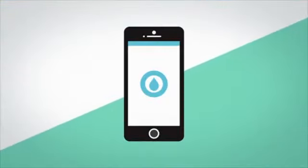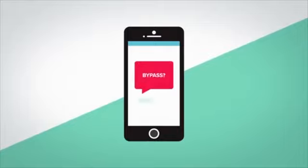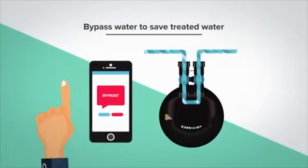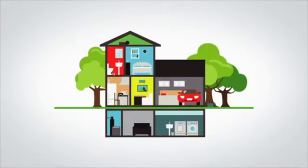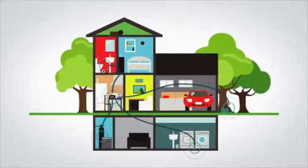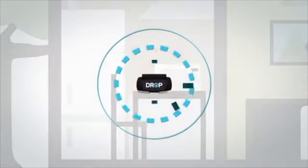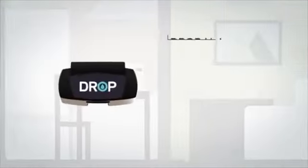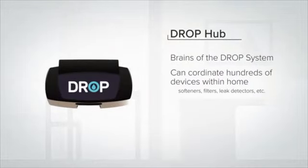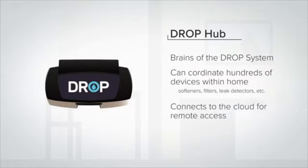Another unique feature offered in Drop softeners is the ability to remotely bypass the treatment. If you happen to be outside watering the garden and don't want to waste treated water, turning off treatment is as simple as opening the Drop app and touching a button. When you buy a Drop cabinet water softener, you are installing a product in your home that is part of an ever-expanding ecosystem of water management products designed to work together in harmony. All Drop products are controlled by the Drop hub, which is the brains of the system and can coordinate hundreds of devices within the home while also connecting your system to the cloud for remote access.